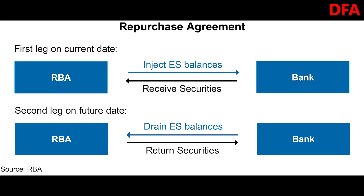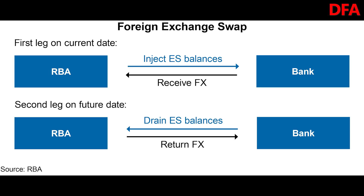The main tools used in open market operations are repurchase or repo agreements and foreign exchange swaps. Both repos and foreign exchange swaps involve a first and a second leg. The first leg of a typical repo in open market operations, which injects ES balances, involves the RBA providing ES balances to a bank and the bank providing eligible debt securities as collateral to the RBA. Taking collateral safeguards the RBA against loss in the case of counterparty default. The second leg, which occurs at an agreed future date, unwinds the first leg — the bank returns the ES balances and the RBA returns the securities to the bank.